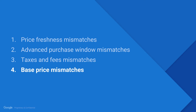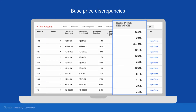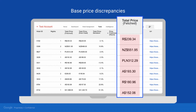Now let's look at base price mismatches. Once again, use the drop-down menu to add columns to your view. Select base price fetched, base price from feed, and base price deviation. Click base price deviation to sort and identify itineraries to share with your tech team to investigate. You can also click total price fetched and sort in ascending order. If the fetch price is zero dollars, it means this itinerary was not available on your site. Your system should have updated the price to negative one in the feed to indicate no availability.